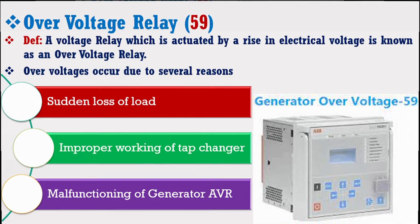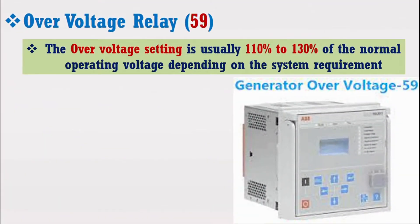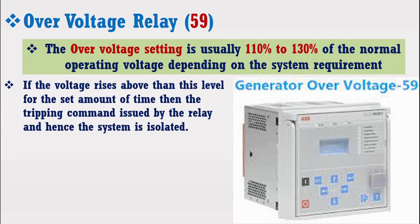The overvoltage setting is usually 110% to 130% of the normal operating voltage depending upon the system requirement. If the voltage rises above this level for the set amount of time, then the tripping command is issued by the relay and hence the system is isolated. Let's discuss its designing in MATLAB Simulink software.